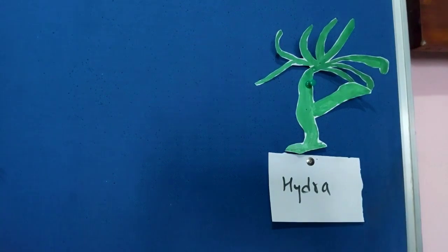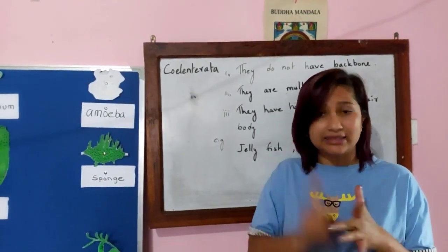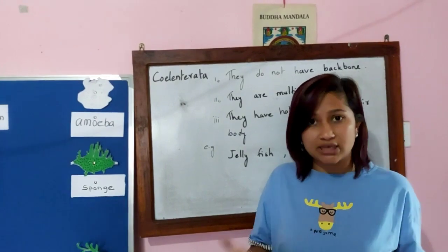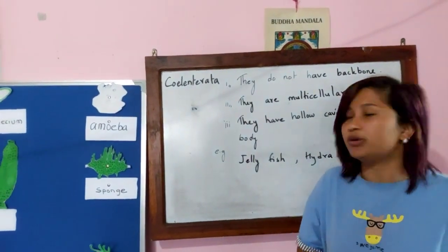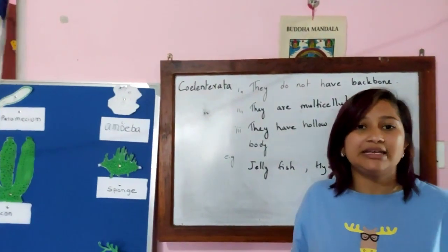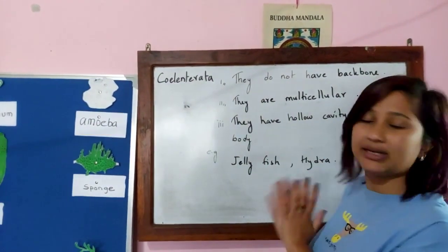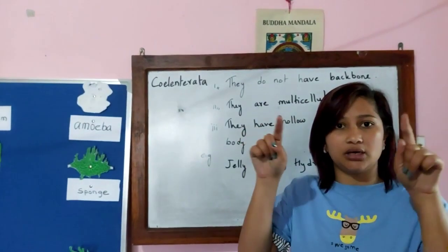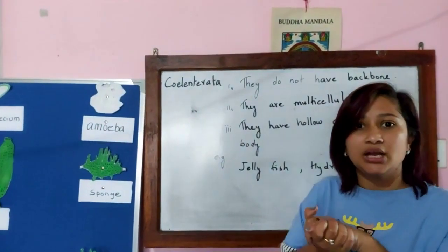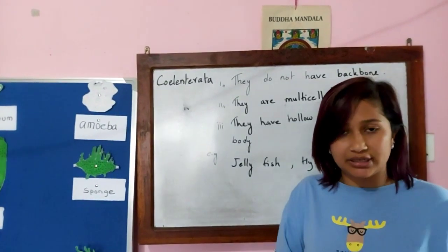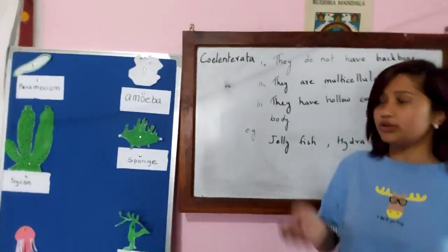So we have learned about three phylums today: Protozoa, Porifera, and Coelenterata. The other phylums we will be discussing in my next video. Please note there are other characteristics as well, but we will only focus on three characteristics of each so that it is easy to understand and remember. Please make notes on the topic of animal kingdom, and I don't have any assignments for you today. Make notes and I will come back in the next video with the other phylums.